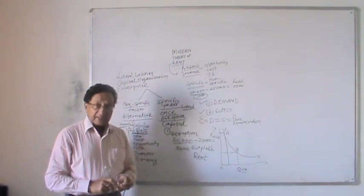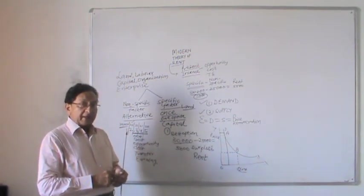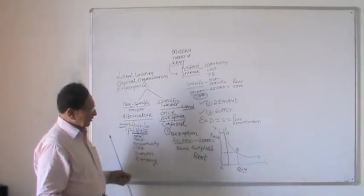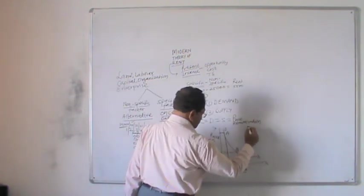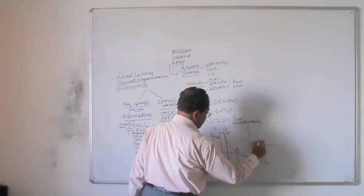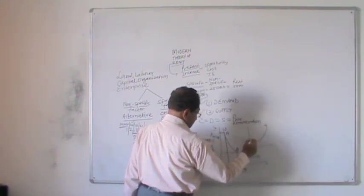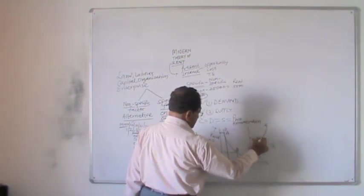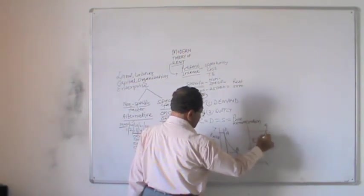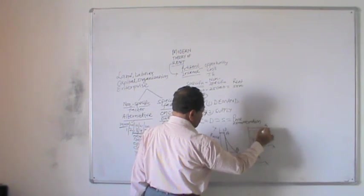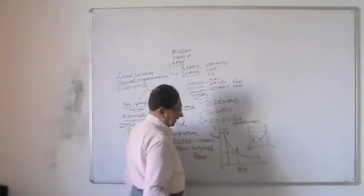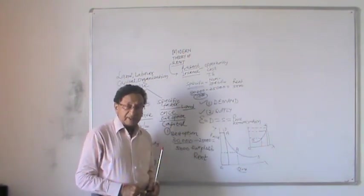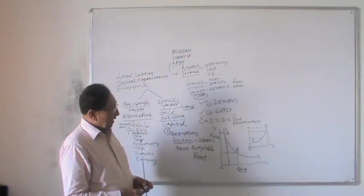Supply is different. When we talk about the supply of all other factors other than labor, then it will be a simple supply curve sloping upwards to the right. This means that lower the price, lower the supply; higher the price, higher the supply. Supply of a factor is governed by price.